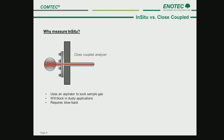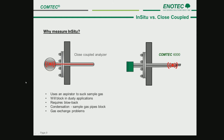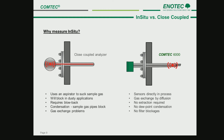The probe requires blowback systems to clear blockages. Acid condensation can take place, sample gas pipes block — especially when gas components such as sulfur are present in the flue. This leads to low sample gas flow or blockages in the sample gas pipes. The Comtec sensors are directly in the process and gas exchange takes place through large diffusion filters. No extraction is required, no dew point condensation takes place, no filter blockages occur. These simple principles make the Comtec system a low-maintenance system.